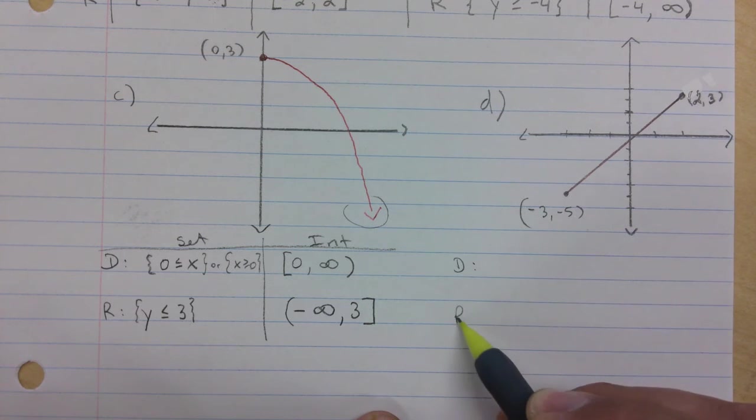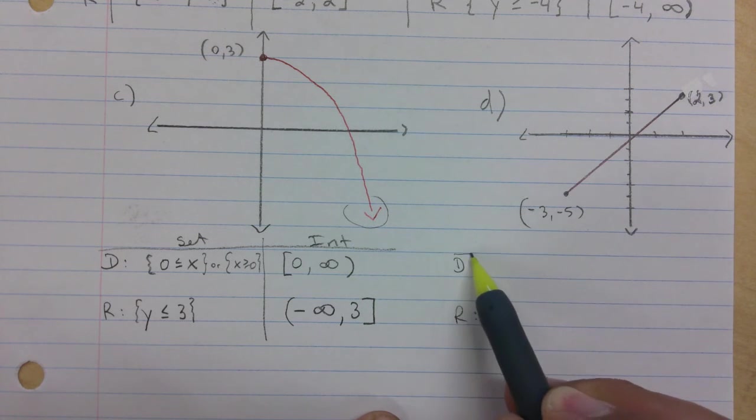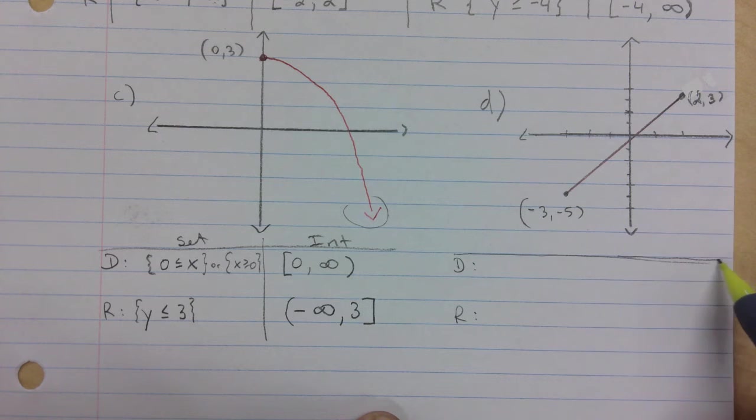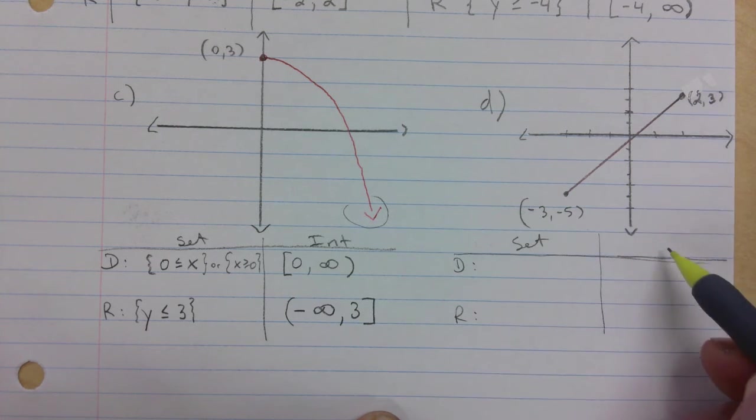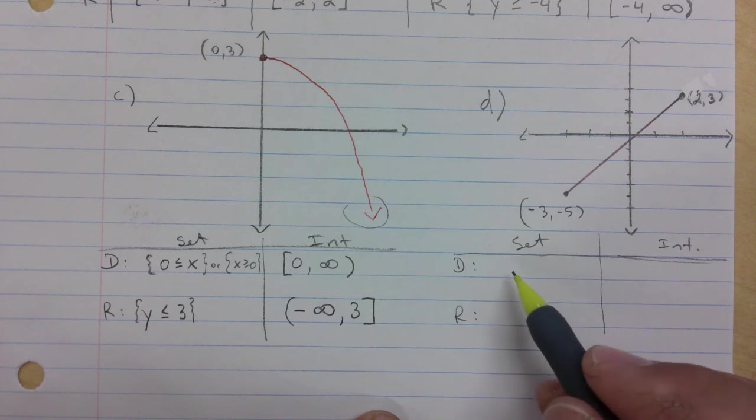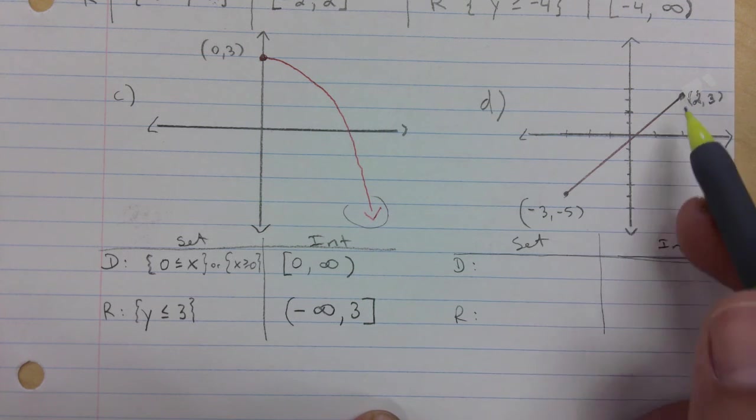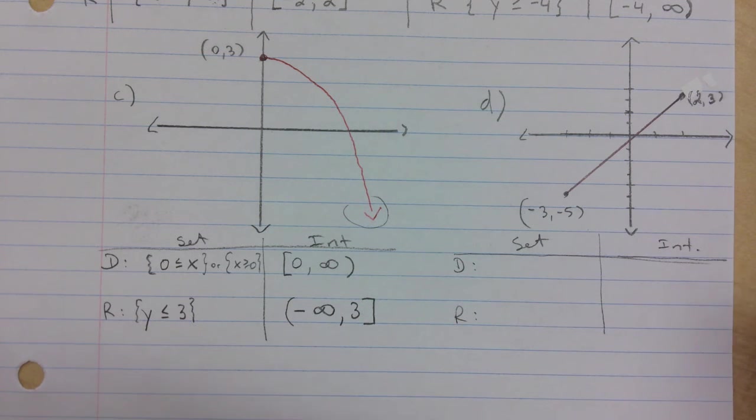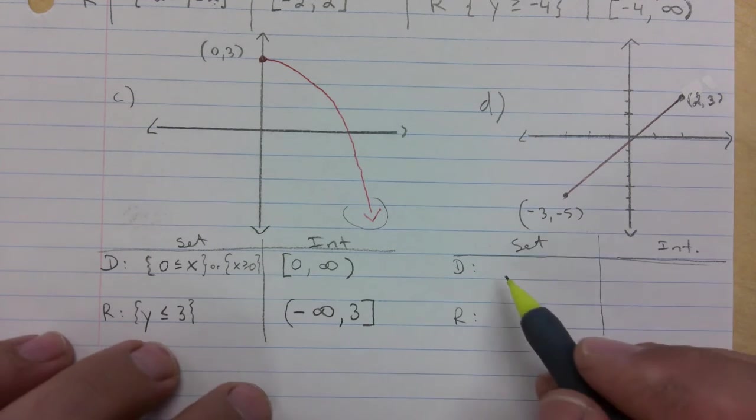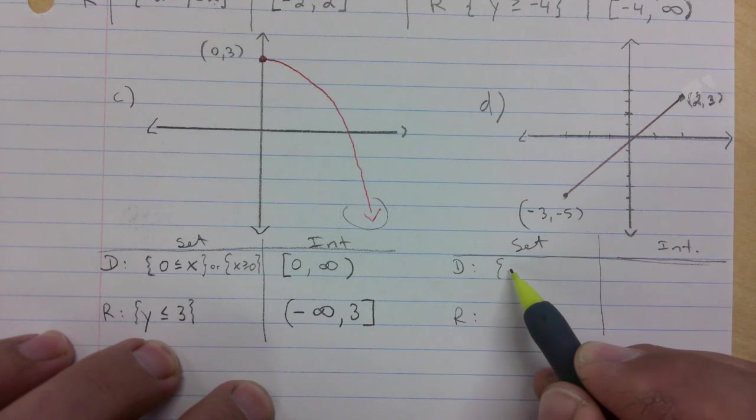So set, interval. And so in this case, I have a point on both ends. It's boxed in, basically. It has a beginning and an end. So we would go negative three for x.